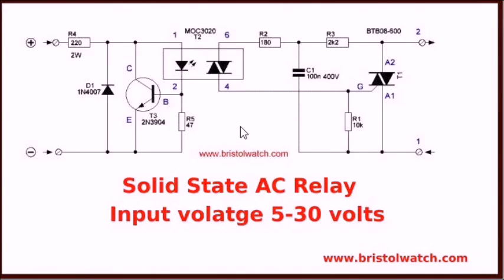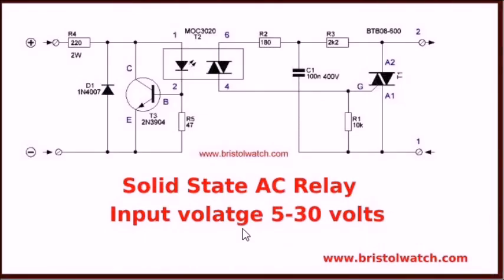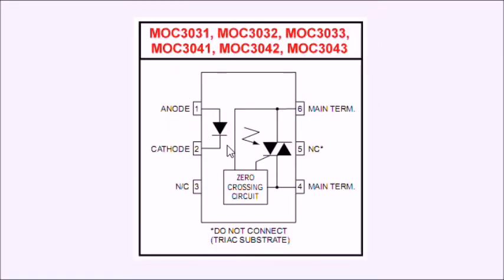The MOC-3031 and others listed also have internal zero-crossing circuitry. If you want to build a solid-state AC relay that you just want to switch power on and off, I would go with these. If you're going to try to phase-control the TRIAC — that is, if you're trying to control the brightness of a light bulb or the speed of a motor — you need to use the plain phototriac type optocoupler. If you're just cutting lights on and off, the zero-crossing types will work fine and are preferred.